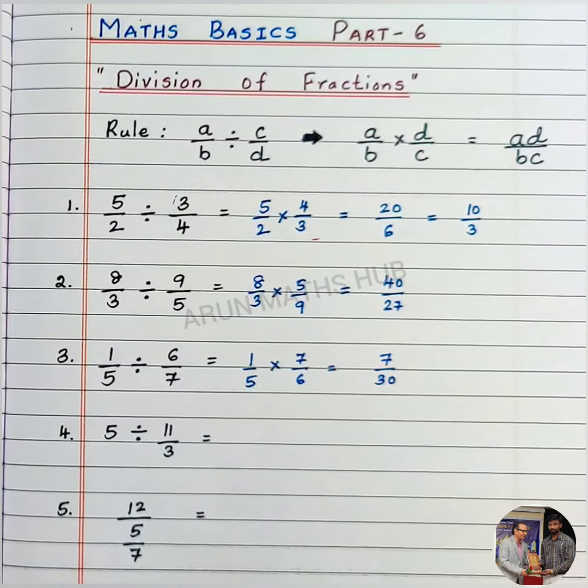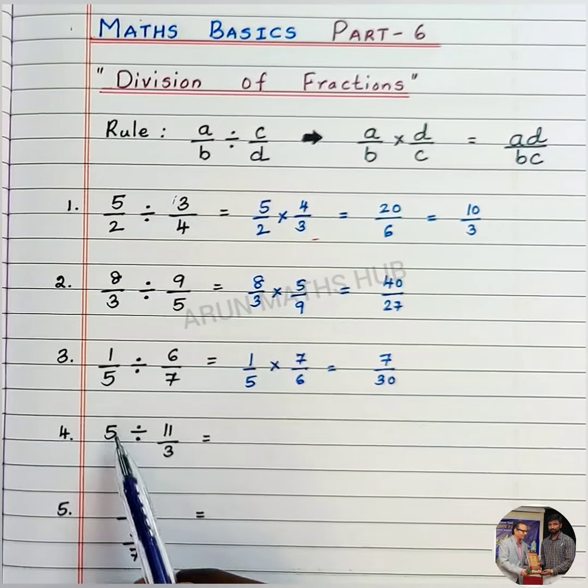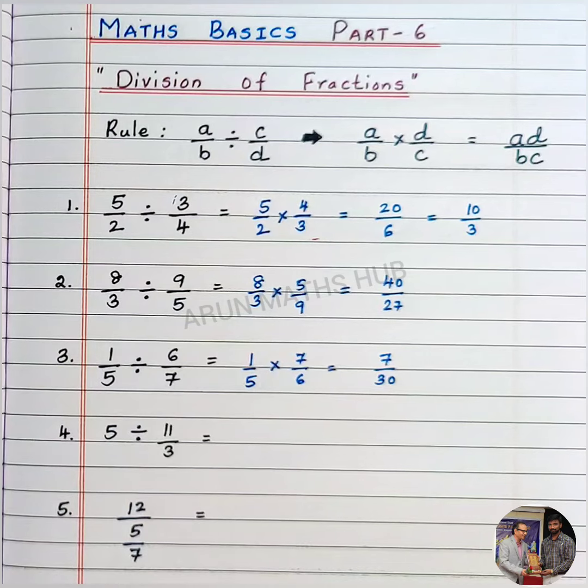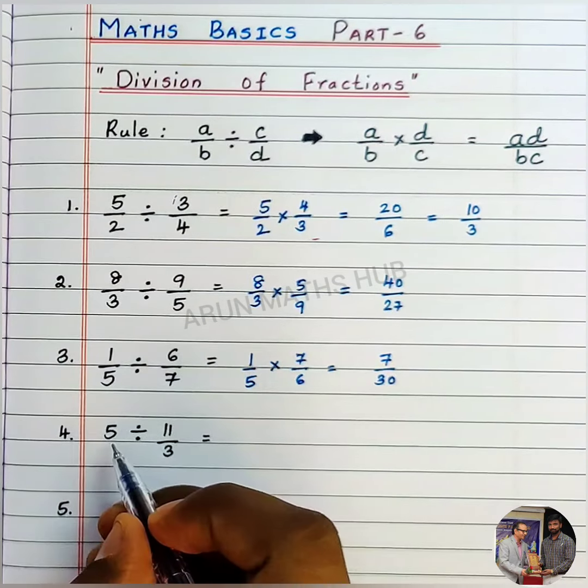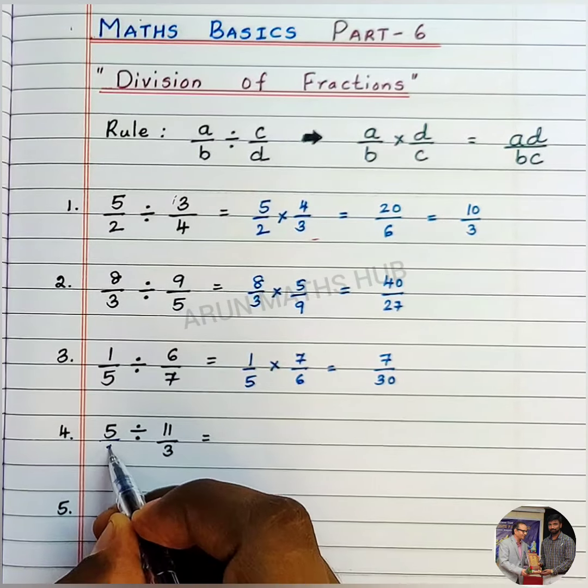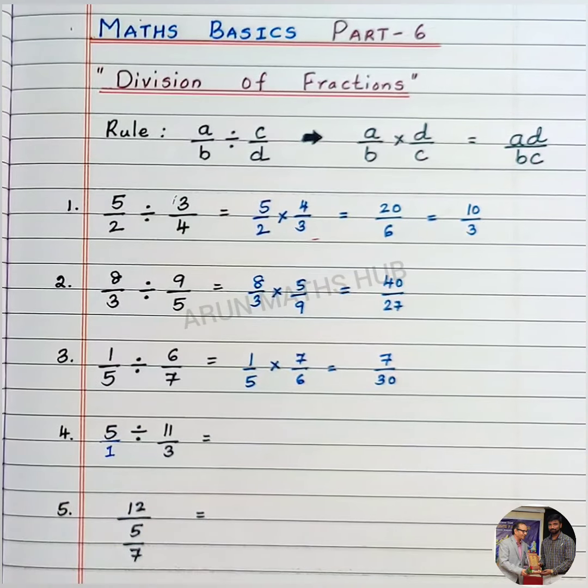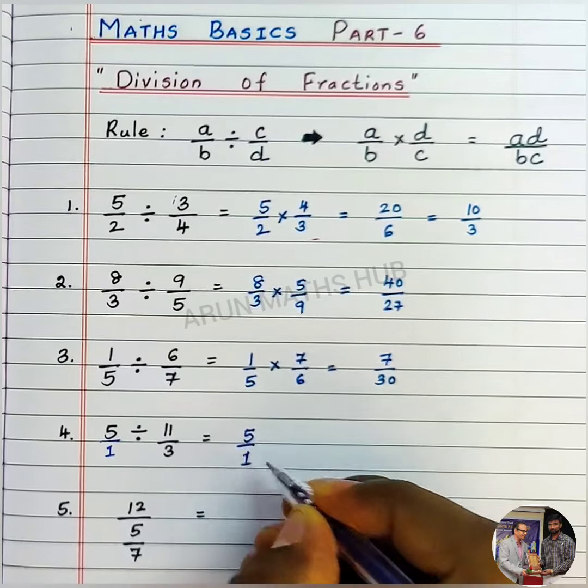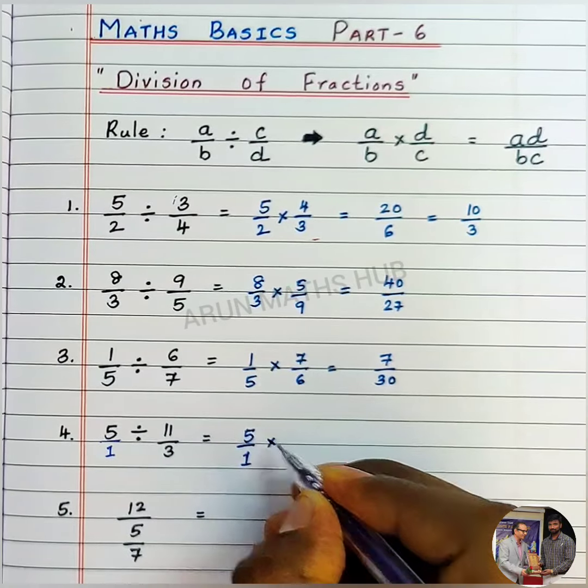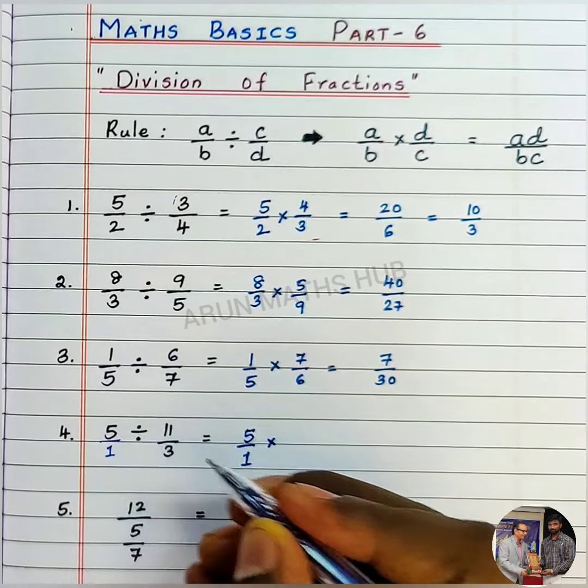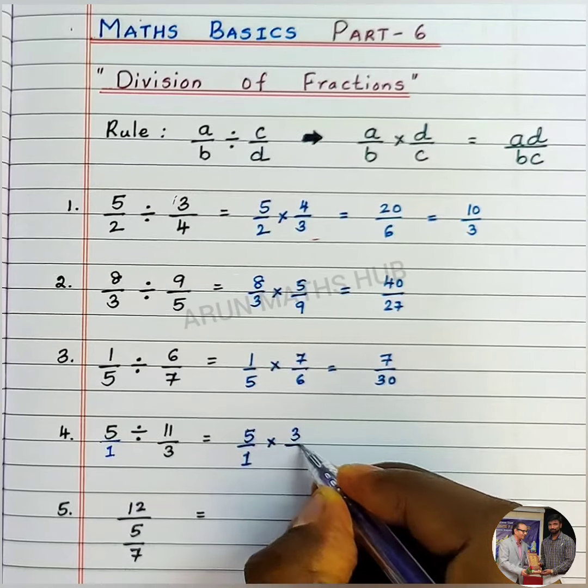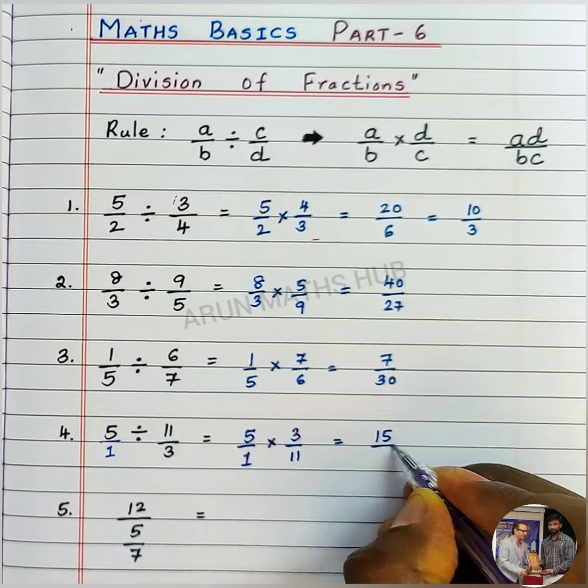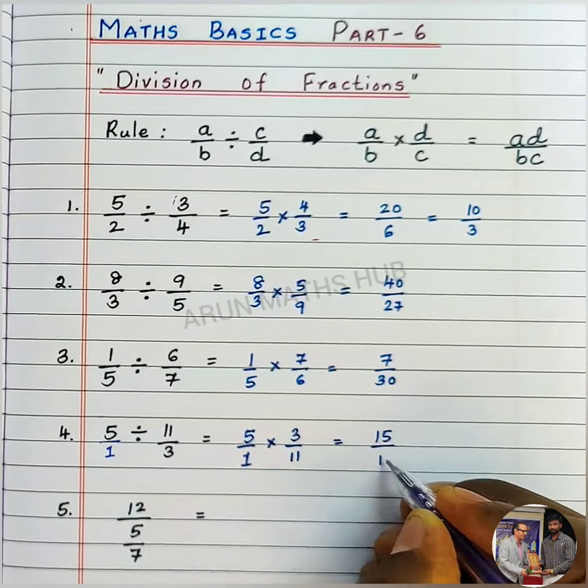Now here is a special case: a whole number divided by a fraction. I will convert this whole number as 5/1. 5 is same as 5/1. Now 5/1 will be as it is, division becomes multiplication, 11/3 becomes 3/11. Now 5 into 3 is 15 divided by 1 into 11 is 11.